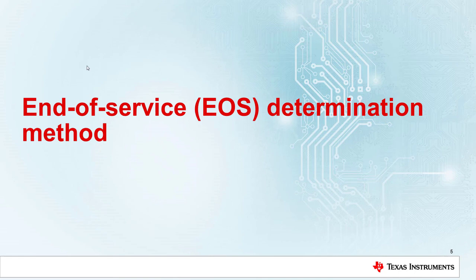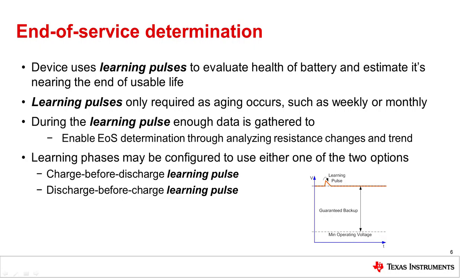The first algorithm I'll walk through is the end-of-service determination method, which is integrated into the BQ34110. The end-of-service determination uses learning pulses to evaluate the health of the battery and estimate whether it's nearing the end of its usable life in a backup system. It triggers learning pulses to gain data as to what the status of the battery is.